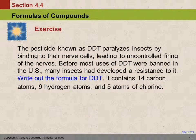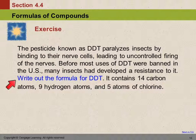The pesticide known as DDT paralyzes insects by binding to their nerve cells, leading to uncontrolled firing of the nerves. Before most uses of DDT were banned in the US, many insects had developed a resistance to it. Now, the actual problem: write out the formula for DDT. It contains 12 carbon atoms, 9 hydrogen atoms, and 5 atoms of chlorine.